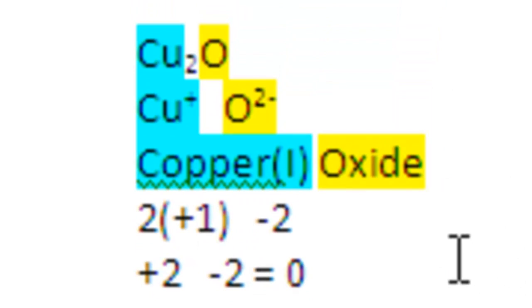Cu2O. This is copper 1 oxide. Oxide still negative 2. In order for this to work out, the two coppers included in this formula, each must have a positive 1 charge. Two positive 1's make a positive 2, with that negative 2 from the oxide sum up to 0. So this is copper 1 oxide.